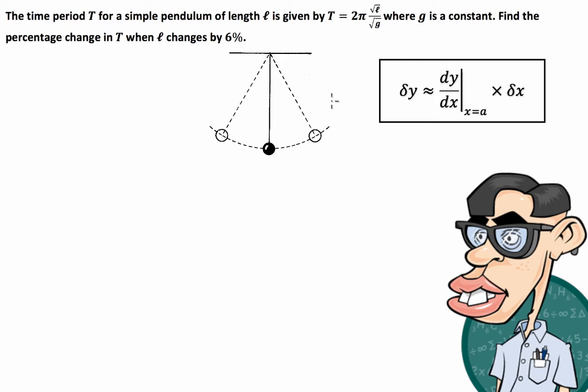We're also told that the percentage change in l is 6%. Now the way that we represent percentage change in these particular questions is the incremental change in length over the original length, so this is represented by δl divided by l.